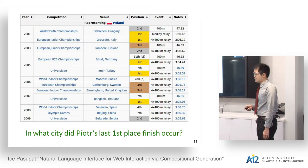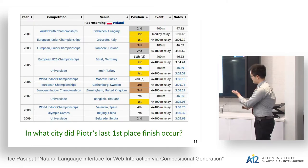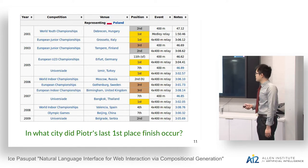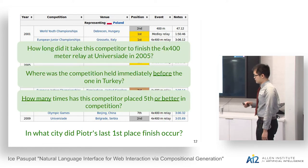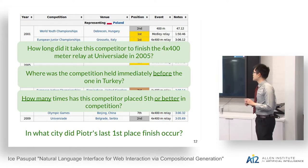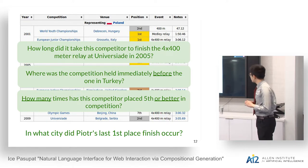Here's a real example — an abbreviated version of a large table. One example question is: 'In what city did this person's last first-place finish occur?' Other questions we consider are pretty complex, requiring things like comparing between choices, doing computation, counting, and so on.